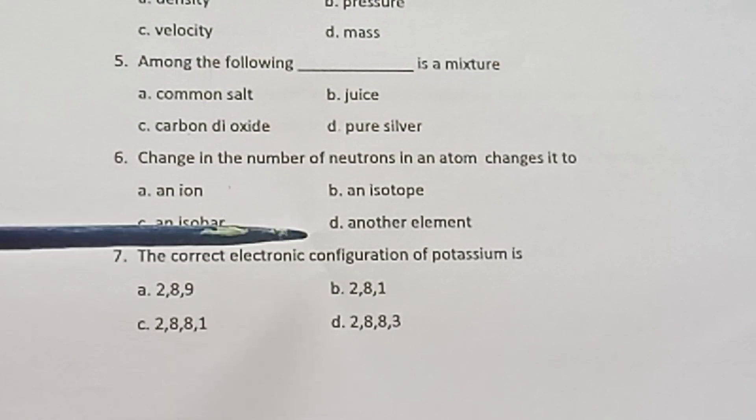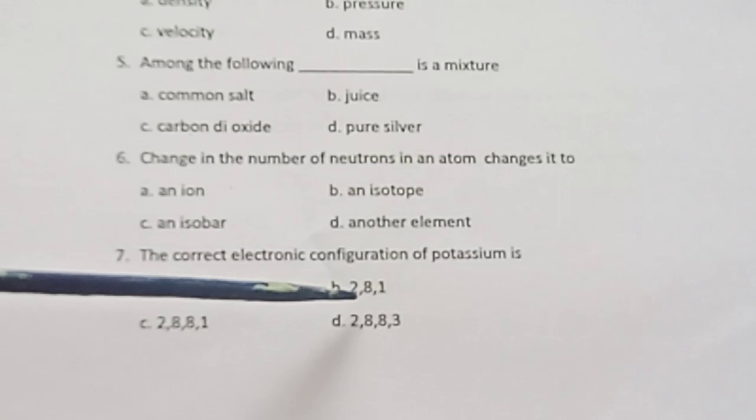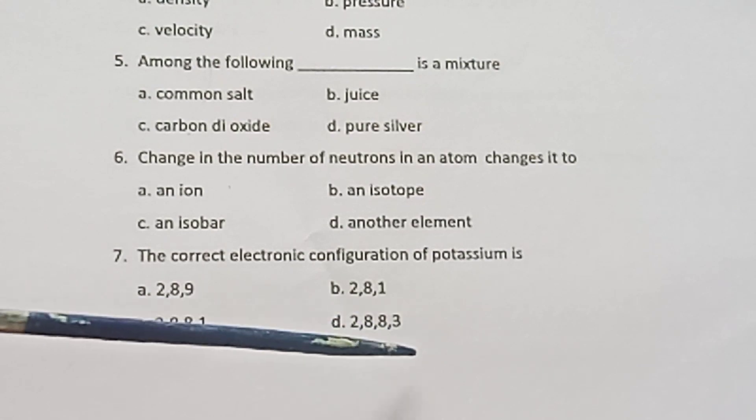Question 7: The correct electronic configuration of potassium is: A. 2,8,9, B. 2,8,1, C. 2,8,1, D. 2,8,8,3.